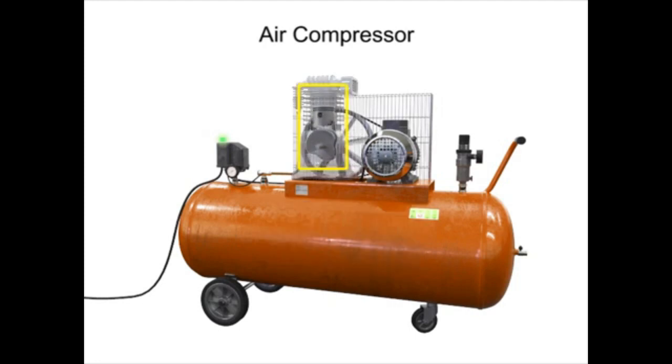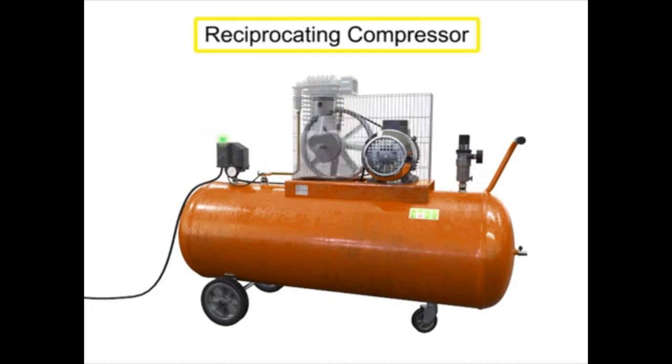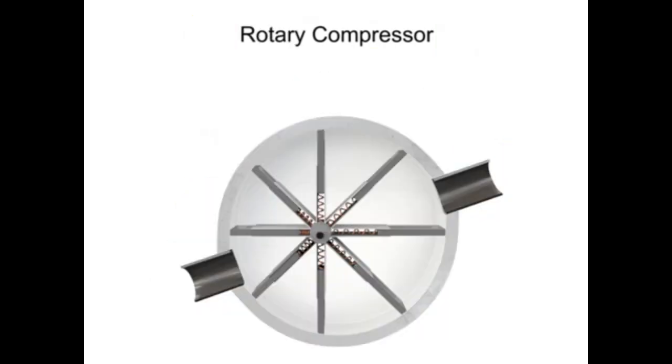Compressors with a piston as the compressing element are called reciprocating compressors. Compressors can also be made with vanes or impellers. These types of compressors are called rotary compressors.